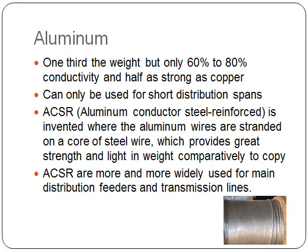Aluminum is one-third the weight, but only 60–80% conductivity, and half as strong as copper. Because of its strength limitations, it can only be used for short distribution strands. There is another technology called ACSR — Aluminum Conductor Steel Reinforced — where aluminum wires are stranded on a core of steel wire, which provides greater strength and is comparatively light in weight compared to copper.